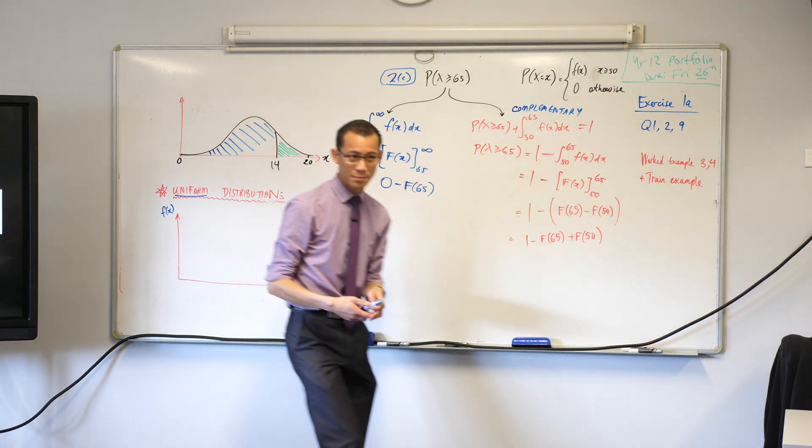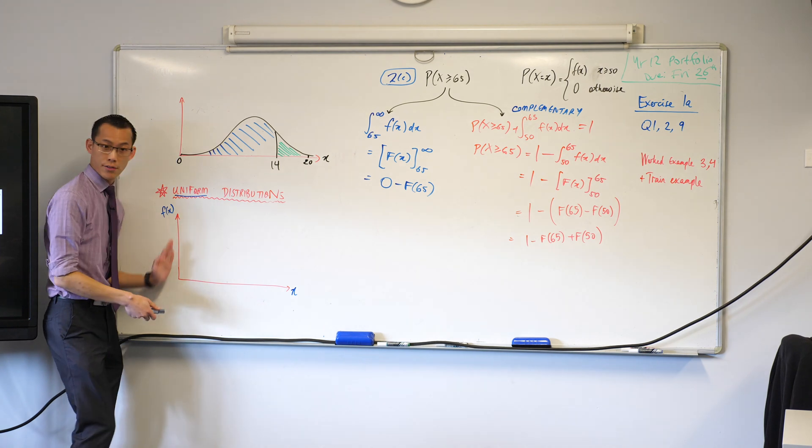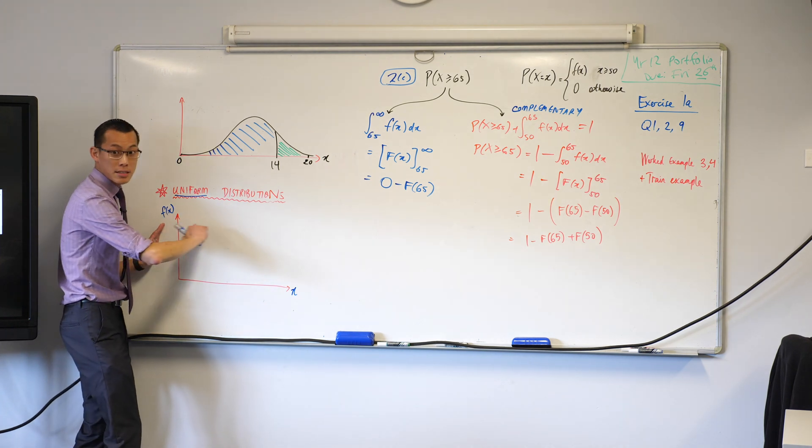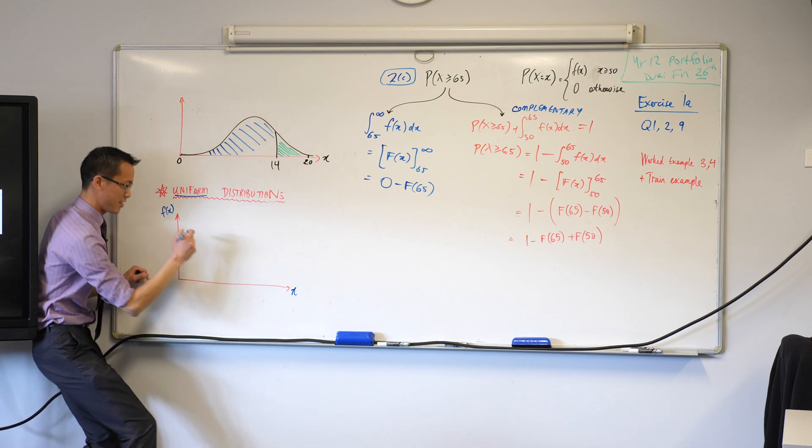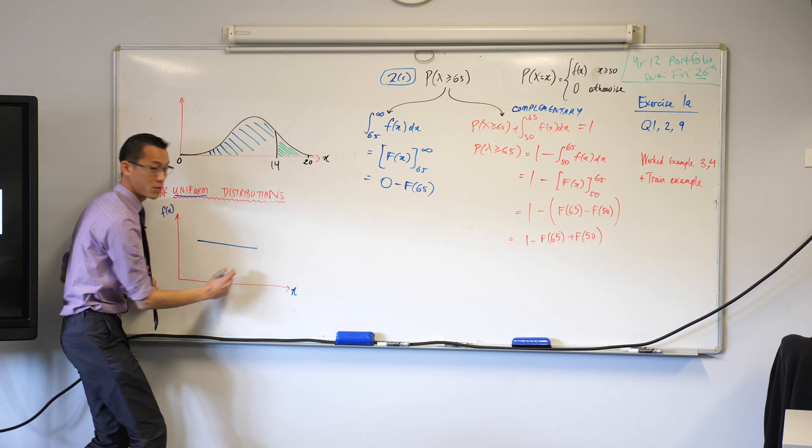Now, for that reason, if your probability, which is on the vertical axis, if it's always going to be the same, you get a very boring shape out of this. It's just going to be a horizontal line of some kind.